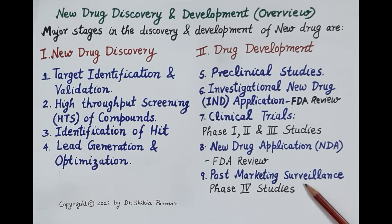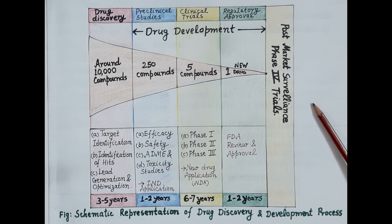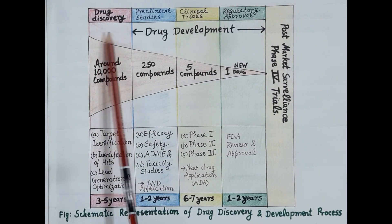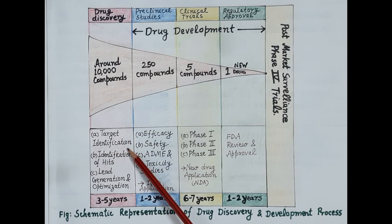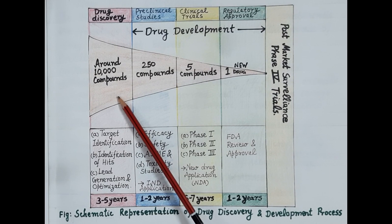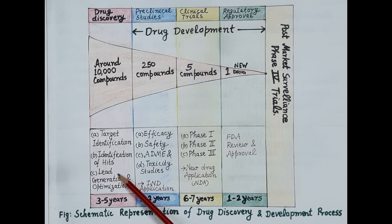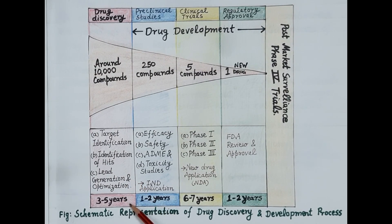Looking at this figure, it gives a compiled schematic representation of the new drug discovery and development process. To review: drug discovery involves identification of the target, screening of around 5,000 to 10,000 active compounds, identifying around 100 to 200 hits, further screening of hits to generate leads, and then using leads as templates to design around 250 molecules by chemical modification. The entire process of drug discovery takes around three to five years.